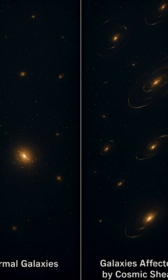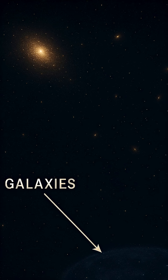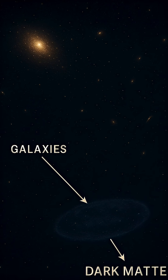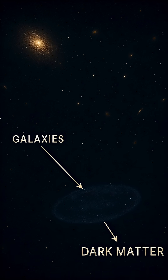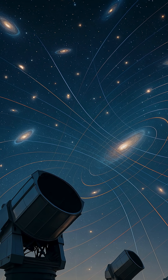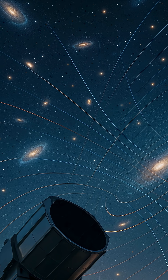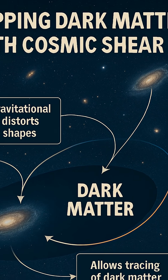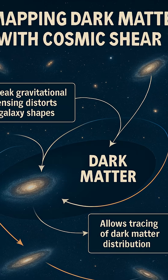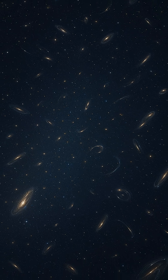Now imagine that windowpane is the entire universe, and that distortion carries secrets about what lies between us and those distant galaxies. Most of the mass responsible for these distortions is invisible — it doesn't emit light or heat — because it's made of dark matter, a mysterious substance that dominates the universe's mass but interacts only through gravity. As cosmic shear subtly alters the shapes of background galaxies, astronomers reverse engineer these distortions to create maps of dark matter across the sky — snapshots of how the universe's structure has evolved over time.